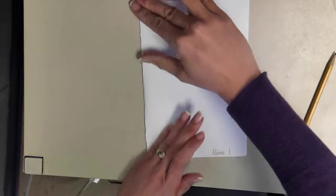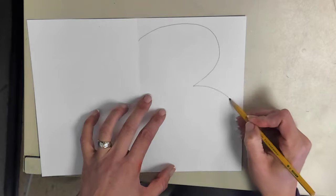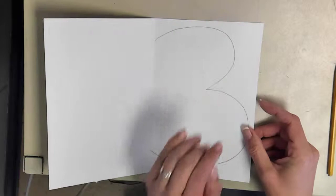On one half of the paper I want you to draw half of a butterfly. So I usually do a small lump and a big lump, and on that side you are going to decorate it with paint.